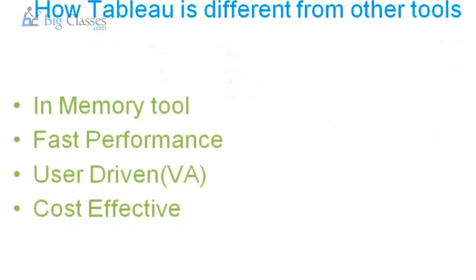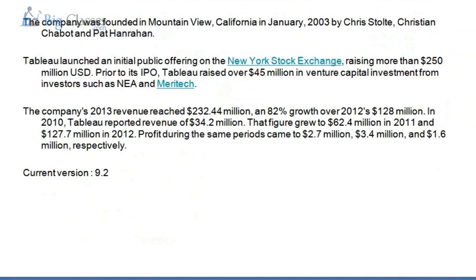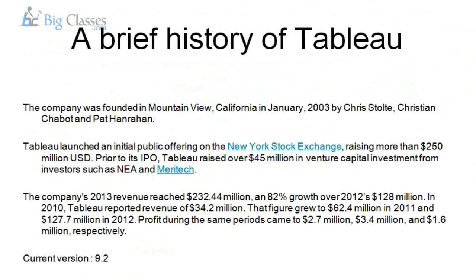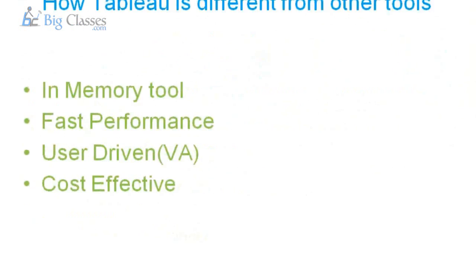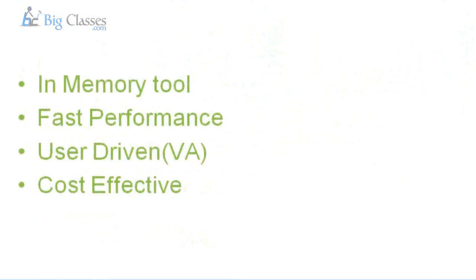Let's look at a brief history of Tableau and how it is quite different from other BI tools. Tableau was started in 2003 by Chris Stolte and Christian Chabot. It is publicly listed and each year the growth rate has been very good. The latest version at that time was 9.3, and in the Gartner review, Tableau was standing in the first position among all business intelligence tools. Tableau is an in-memory tool — so what is this in-memory concept?